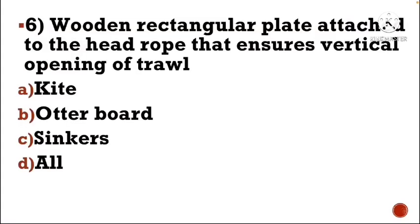Next question: Wooden rectangular plate attached to the headline that ensures vertical opening of trawl — Option A: kite, Option B: otter board, Option C: sinkers, Option D: all. The correct answer is Option A, kite.